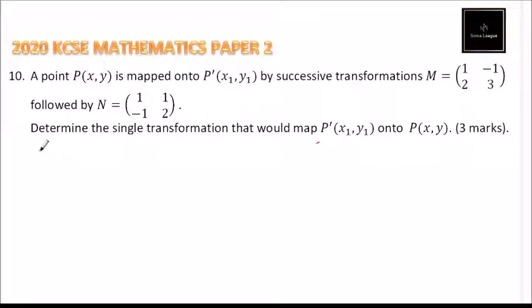When you are multiplying a matrix, we are told that successive transformation, it is M followed by N, and this is the matrix that is how we multiply, that is P'. P' is, it is equals to, we start with the matrix N, M and N.